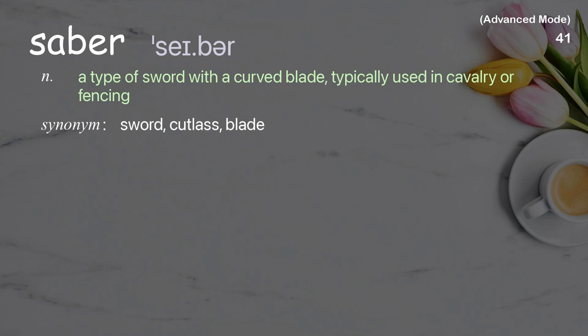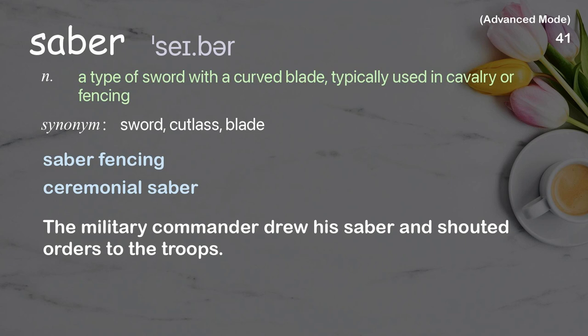Saber: A type of sword with a curved blade, typically used in cavalry or fencing. Examples: Saber fencing, Ceremonial saber. The military commander drew his saber and shouted orders to the troops.